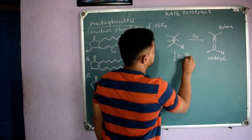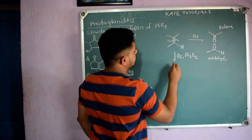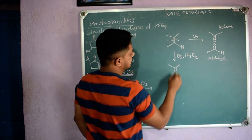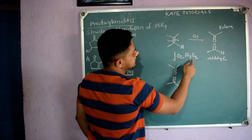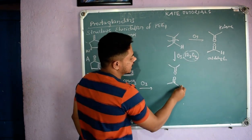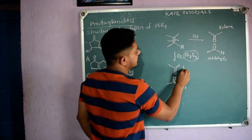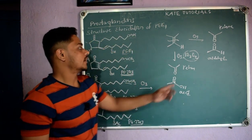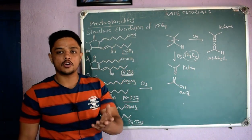If instead of only O₃ we also add an oxidizing agent like H₂O₂, what happens is: the ketone remains as it is, but on the aldehyde side where H is present, the oxidizing agent provides oxygen. So instead of getting an aldehyde, we get an acid group (COOH). So with oxidizing agent we get ketone and acid, not ketone and aldehyde.